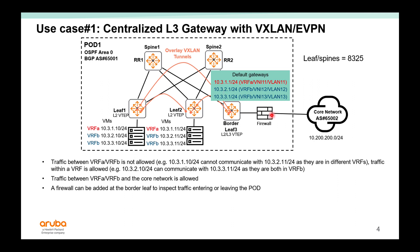Traffic between the VRFs and the core network is allowed, but traffic between the two tenant VRFs is not allowed. A firewall can be added at the border leaf to inspect traffic entering or leaving the pod. In AOS-CX, we use VLAN-based VXLAN, meaning each VLAN is mapped to one VNI. For example, VLAN 11 is mapped to VNI 11, and VLAN 12 is mapped to VNI 12. Each VRF can have multiple VNIs — VRF B has VLAN 12 and 13, mapped to VNI 12 and 13.